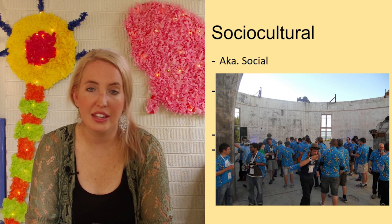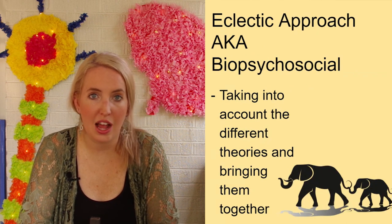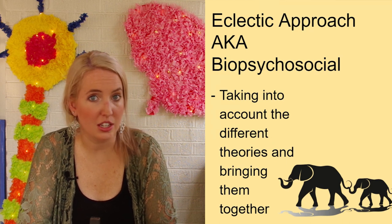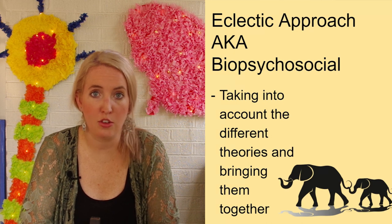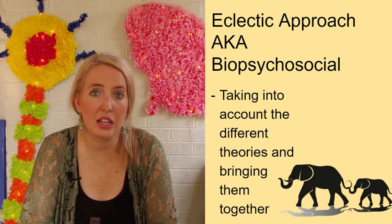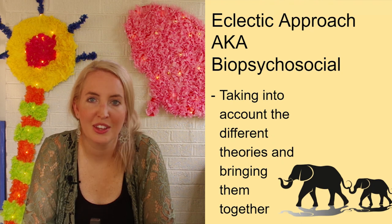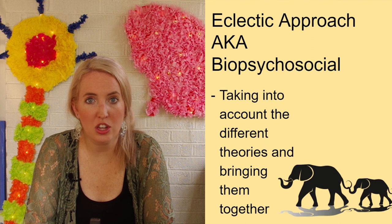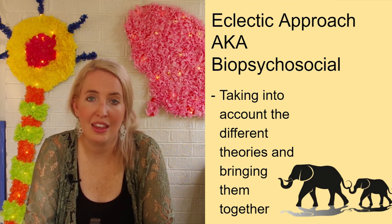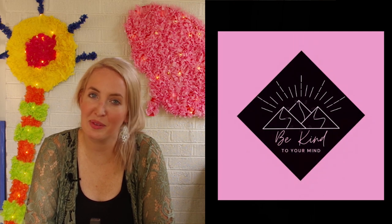Those are the seven modern perspectives of psychology, each giving a different explanation for why people think and act the way they do. Most modern psychology uses a variety of perspectives — called the biopsychosocial or eclectic approach — to explain the full spectrum of human behavior. By now you should know the seven major perspectives and how each varies in explaining human behavior. Next, we'll cover the subfields of psychology and different careers in the field. Thanks for watching, and remember — be kind to your mind.